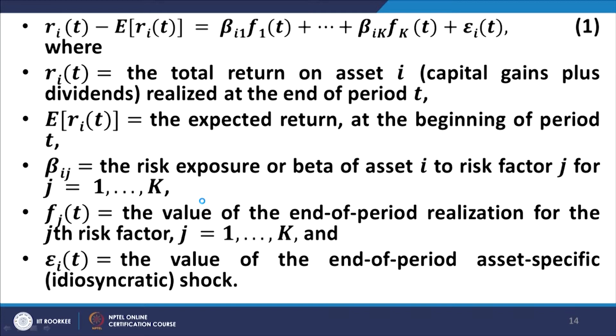R_it is the total return on asset i including capital gains and dividends realized at the end of period t. E(r_it) is the expected return estimated at the beginning of period t. Beta_ij is the exposure or beta of asset i in relation to risk factor j, representing the risk exposure of asset i to risk factor j, where j varies from 1 to k — assuming k risk factors contribute to the expected return on security i. F_jt is the end-of-period realization of the jth risk factor.